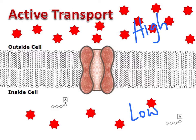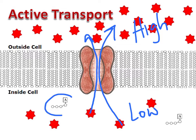But in this case, the cell is actually able to pump molecules from an area of lower concentration to an area of higher concentration. It does this by using energy in the form of ATP. And by using its own energy, it can actually pump these particles against the concentration gradient.